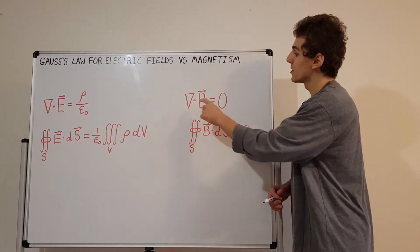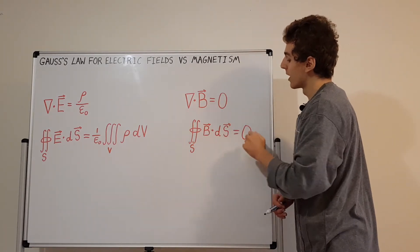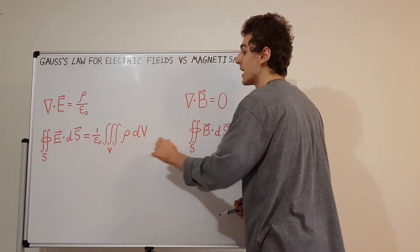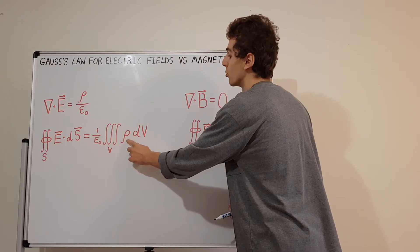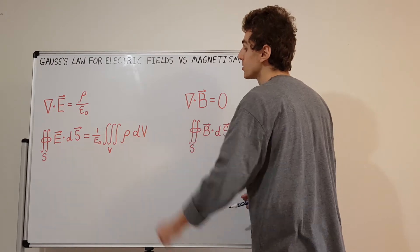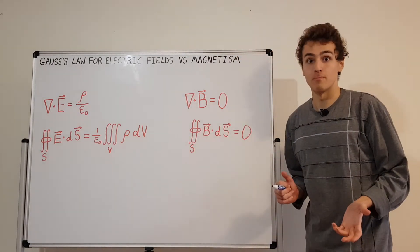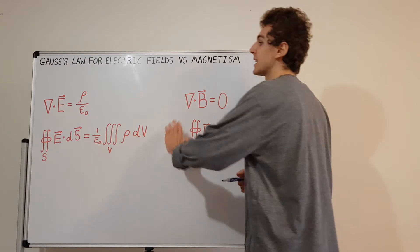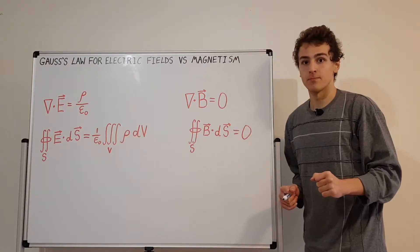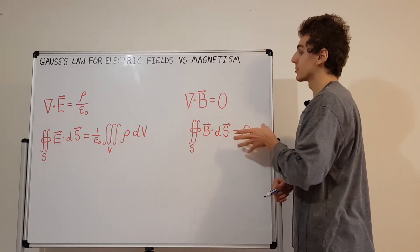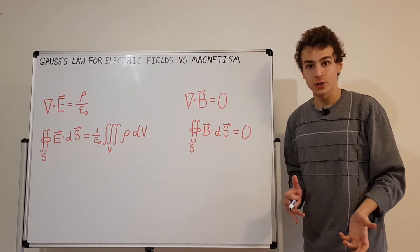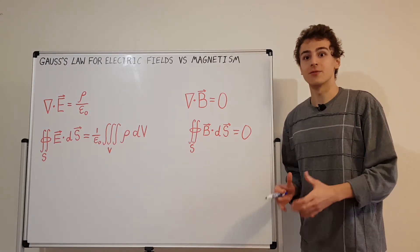In both equations, the divergence and the surface integral are zero on the magnetic side. But on the electric side they depend on rho, the charge density, which tells you how much charge there is per unit volume. This tells us that electric fields are produced by charges, while magnetic fields don't have that same property — there are no magnetic charges because there are no magnetic monopoles as far as we know.